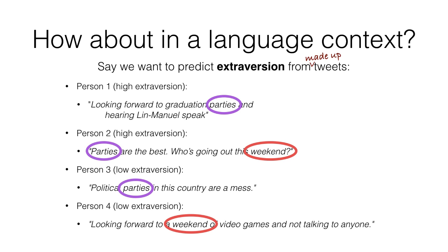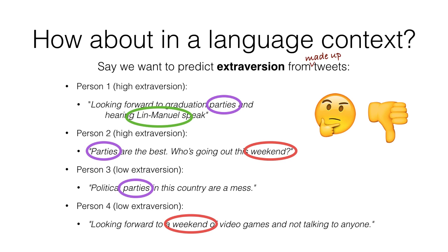'Weekend,' which you might also think of as a predictive feature, in this made-up example doesn't do much better, since it's used by one highly extroverted person and one low extroverted person. What about the feature 'Lin-Manuel' though? In this data, it's only used by an extroverted person. So should the model use that as a meaningful feature for predicting high extroversion? Probably not — if we saw a new person use that name, we probably wouldn't have a good sense of where that person lies on the extroversion trait. If we had much more data, we'd probably see that 'Lin-Manuel' is used equally by high and low extroversion people, while a word like 'parties' is more useful for predicting extroversion. More data can make up for the noise in the relationship.